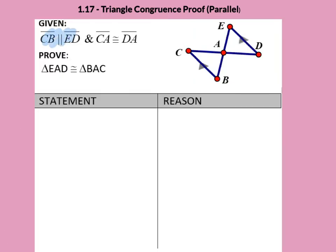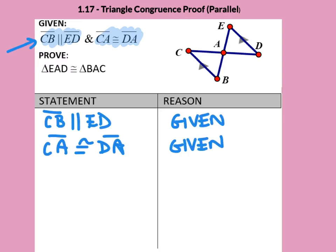Our givens tell us there are parallel lines and congruent segments. It's this parallel line idea that ignites a new way to think. Let's write the givens: CB parallel to ED and CA equals DA. Let's mark what we know. Remember, parallel markings do not mean congruent, they mean parallel.